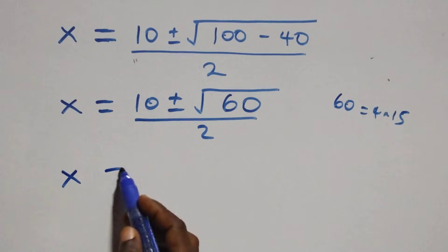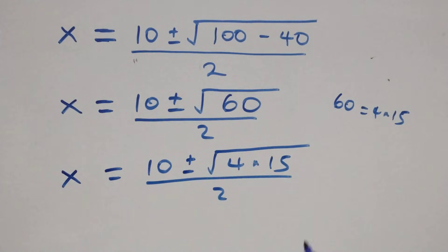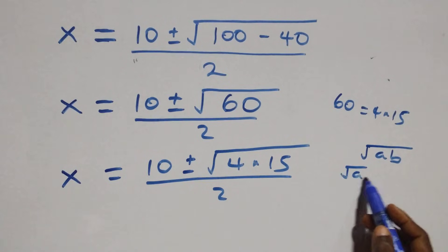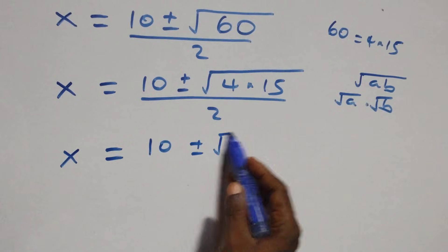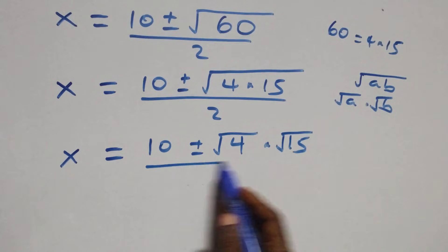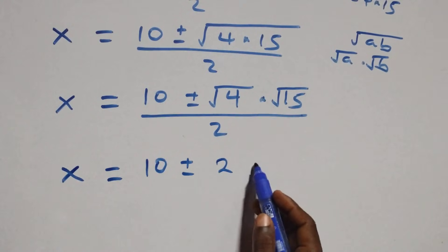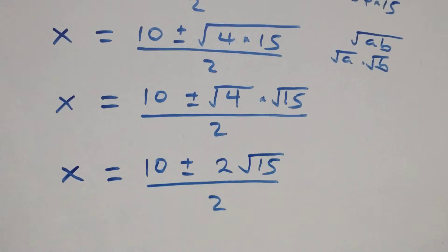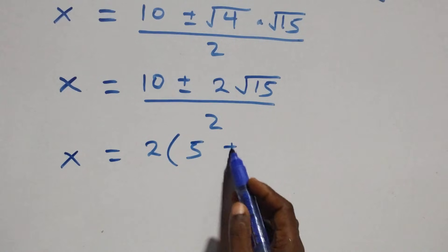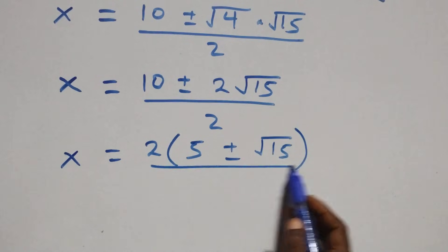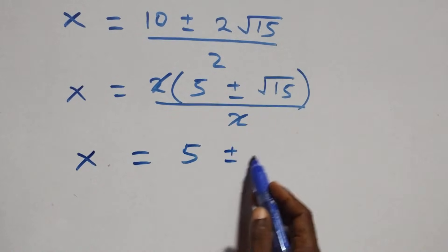This implies x equals to 10 plus or minus square root of 4 times 15, all over 2. Using the rule that root(a times b) equals root a times root b, this becomes x equals to 10 plus or minus root 4 times root 15, all over 2. Root 4 is 2, so we factor 2 out and get x equals to 5 plus or minus root 15.